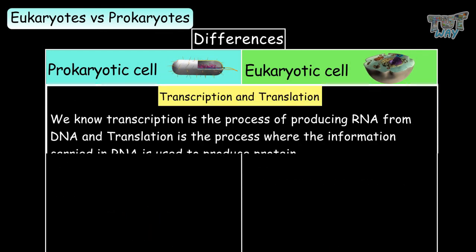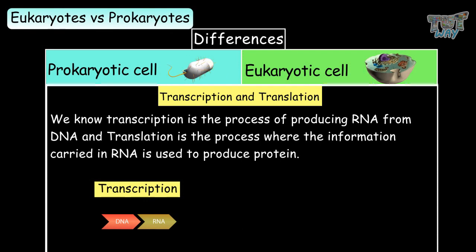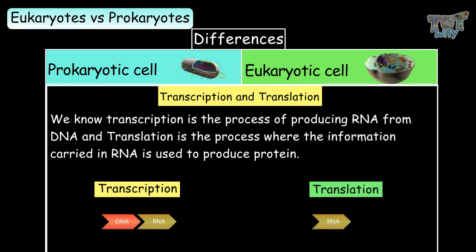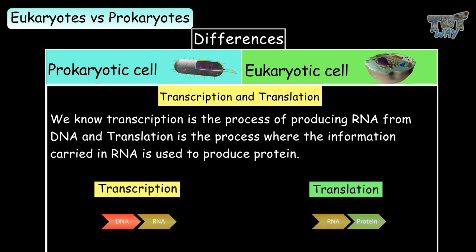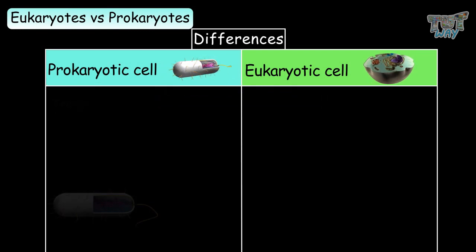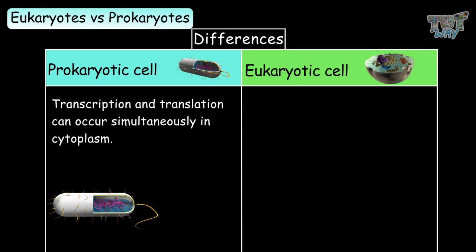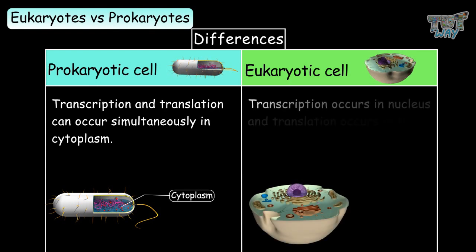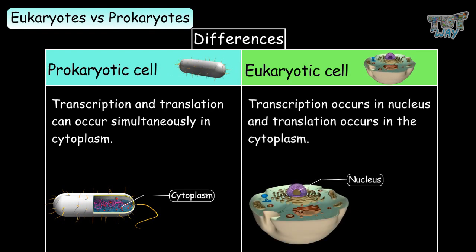Transcription is the process of producing RNA from DNA, and translation is the process where the information in RNA is used to produce proteins. In prokaryotes, transcription and translation both occur simultaneously in the cytoplasm. In eukaryotes, transcription occurs in the nucleus and translation occurs in the cytoplasm.